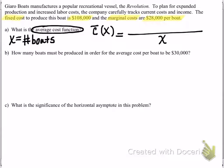So since we only pay the fixed cost once, that would be $108,000. Plus then we'll pay the $28,000 for every single boat we produce. So that would be $28,000 times the number of boats that we make. So $28,000x. And then the whole thing divided by x will be our average cost function.